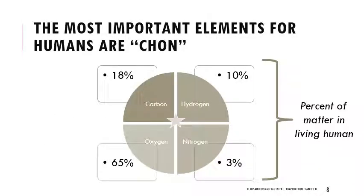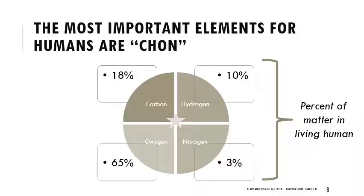When thinking about different elements, most of you are probably familiar with the periodic table. You should be aware of the elements carbon, hydrogen, oxygen, and nitrogen. A quick way to remember that is CHON — carbon, hydrogen, oxygen, nitrogen. Those are very important components of the human body. The diagram depicts the percent of each element making up matter in a living human.